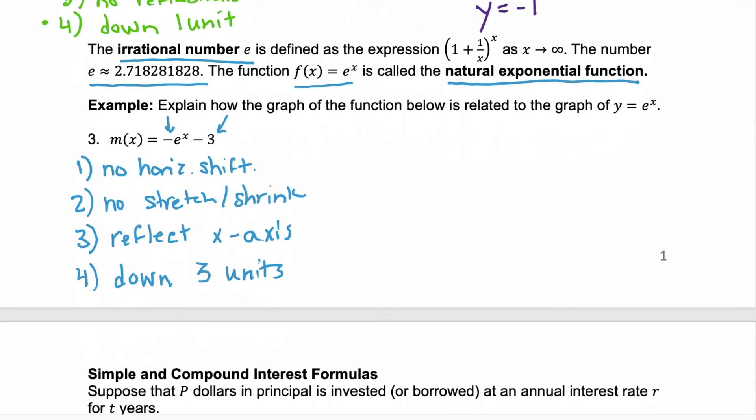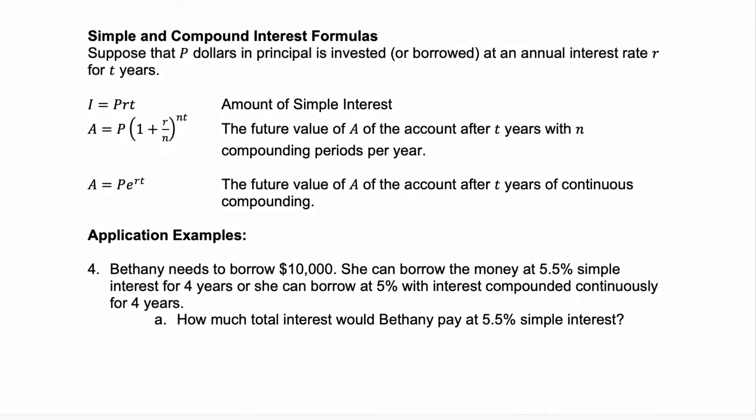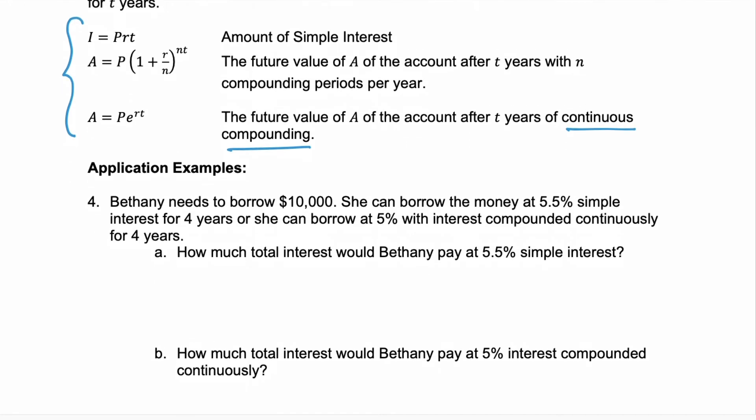Now let's look at some applications of exponential functions. The most common everyday use of an exponential function are interest rates. And here we talk about simple interest rates and compound interest rates. And you can tell the difference between these equations and which one to use based on the wording of your application problem. So let's look at example 4. Bethany needs to borrow $10,000. She can borrow the money at 5.5% simple interest for 4 years, or she can borrow at 5% with interest compounded continuously for 4 years. Part A asks how much total interest would Bethany pay at 5.5% simple interest. Simple interest tells us we're going to use I = PRT.